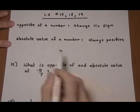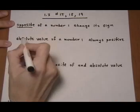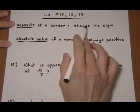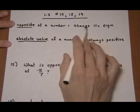Let's first take a look at the definitions for opposite and for absolute value. The opposite of a number is just the opposite sign, to change the sign.